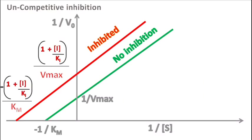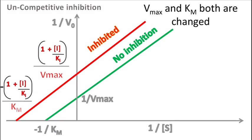If we see the Lineweaver-Burk plot for uncompetitive inhibition, then we can see both Vmax and Km values have changed. This is important to note that the slope is equal to Km upon Vmax.